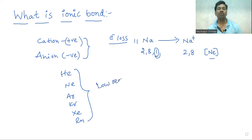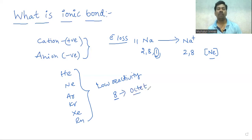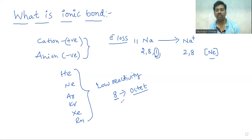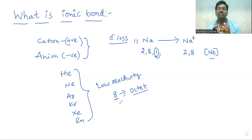Why is the reactivity of noble gases so low? Because in their valence shells, eight electrons are present. This eight-electron configuration is called the octet electronic configuration, and atoms with this configuration are most stable.